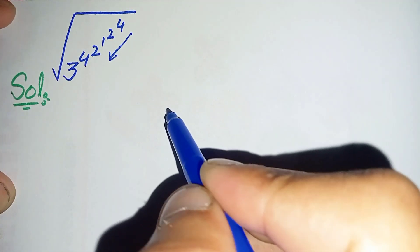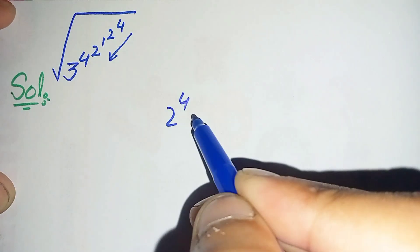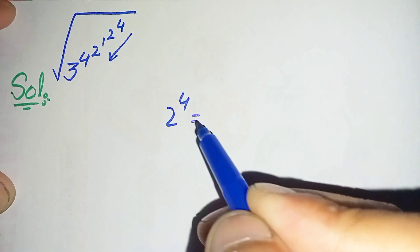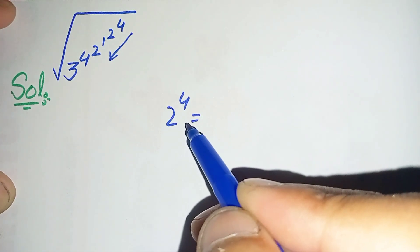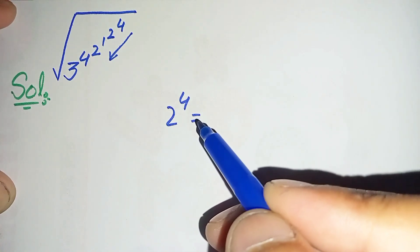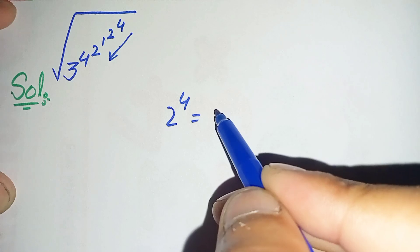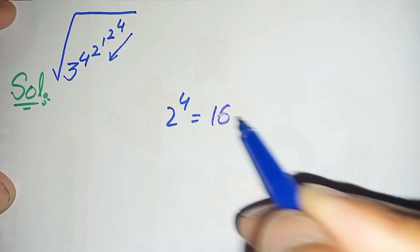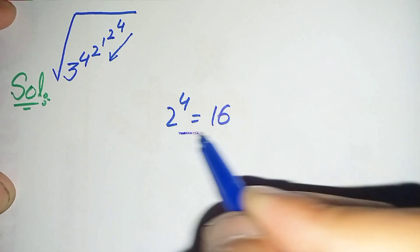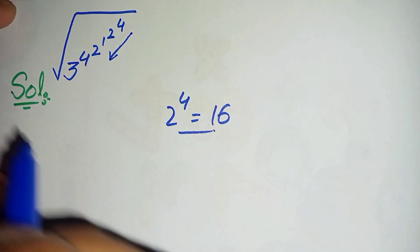2 raised to power 4 simply means to multiply 2 four times: 2 times 2 is 4, 4 times 2 is 8, and 8 times 2 is 16. So 2 raised to power 4 is 16. We will replace 2 raised to power 4 with 16.